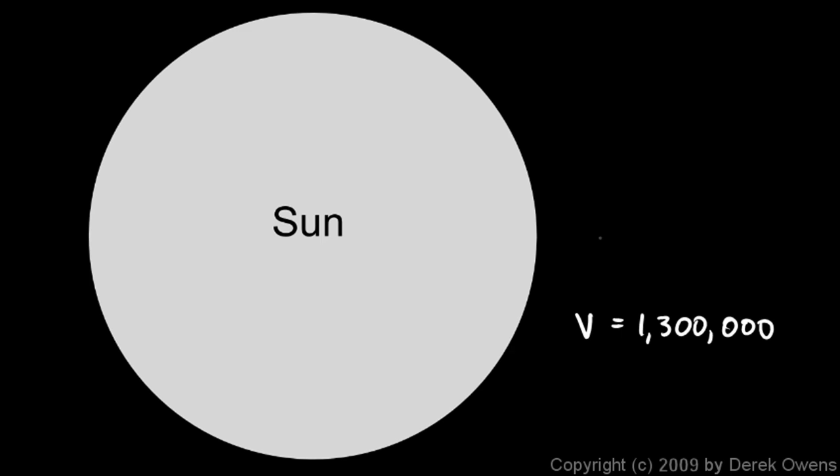That means if you could take the Earth and turn it into liquid, and pour it into a container the size of the Sun, it would take 1.3 million Earths to fill up that container. And as you can see, Earth barely even shows up in this diagram.